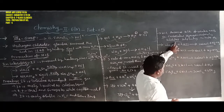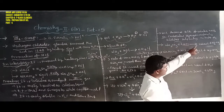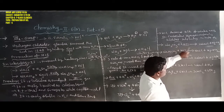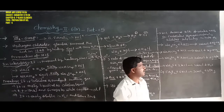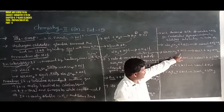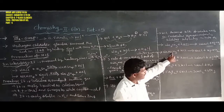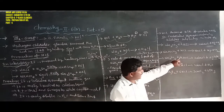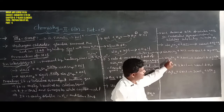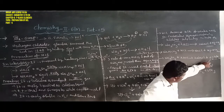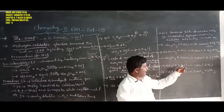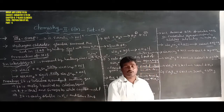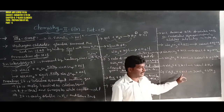Hydrochloric acid decomposes sodium carbonate to form sodium chloride and carbon dioxide. It decomposes sodium bicarbonate to form common salt, water, and carbon dioxide. It decomposes sodium sulfite (Na2SO3) to form sodium chloride, water, and sulfur dioxide. It decomposes sodium sulfide (Na2S) to form sodium chloride and hydrogen gas.